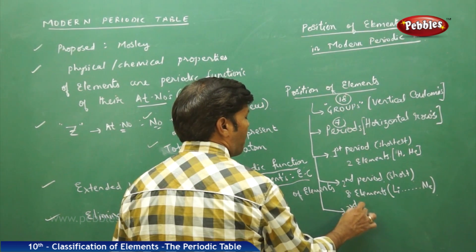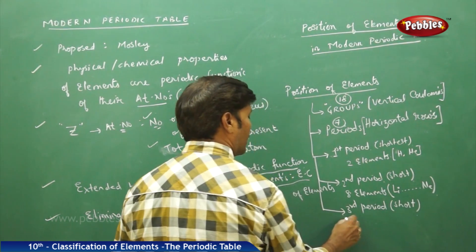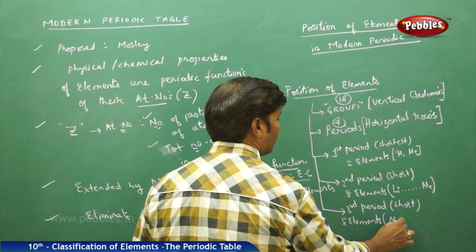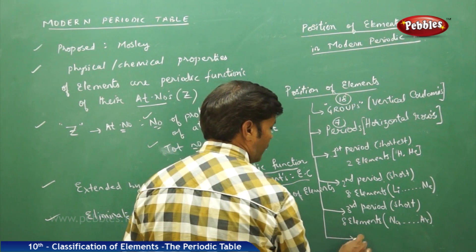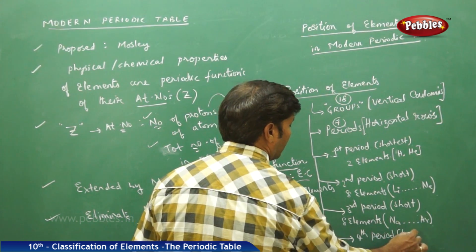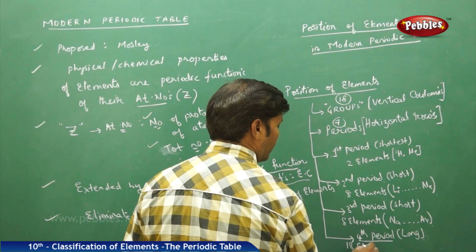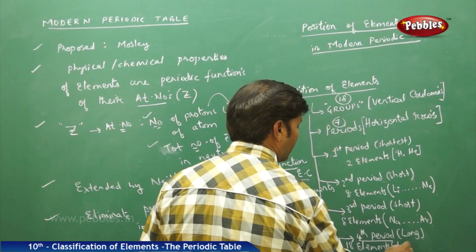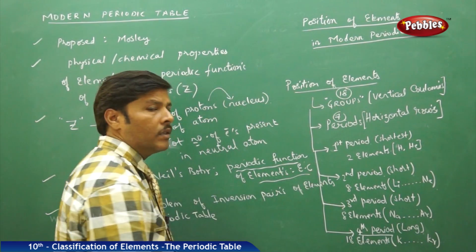The third period is also short and it contains eight elements, starting with sodium and ending with argon. The fourth period is a long period with 18 elements, starting with potassium and ending with krypton.